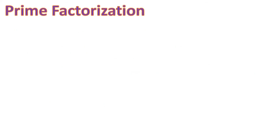Now we are going to use the prime factorization method to find the greatest common factor of 24, 36, and 60. This means we're going to express 24, 36, and 60 as products of prime numbers.